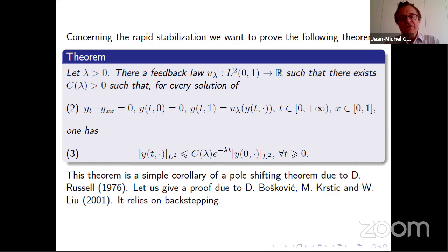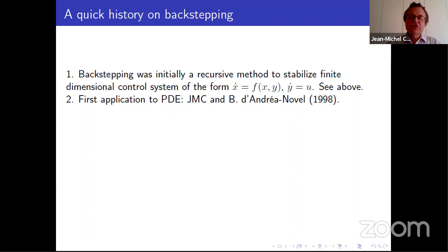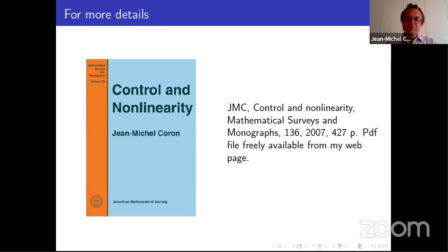This result is a consequence of David Russell's work in 1976, where he proved a kind of pole-shifting theorem for the heat equation. But I want to show another proof due to Coron, Lü, and Liu, which relies on backstepping. As mentioned before, backstepping is used in finite dimension: if you have x-dot equals f(x,y), y-dot equals u, and you can stabilize x-dot equals f(x,y) where x is the state and y is the control, then you can stabilize the first system. There are applications to PDEs covered in books.